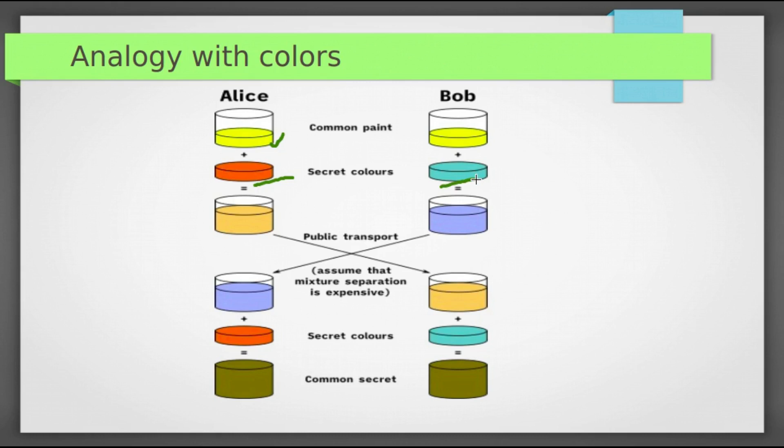Alice and Bob each mix their own secret color with their mutually shared color, resulting in orange tan for Alice and light blue for Bob. They publicly exchange two mixed colors. Finally, each of the two mixes the color they received from the other partner with their own color. Alice will mix this received color with her own private color orange. Bob will also do similar operation. The result is final color of the mixture. It is identical to both of them. Here it is pine green.